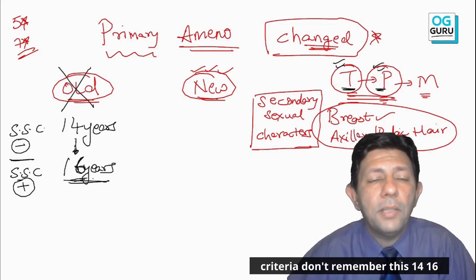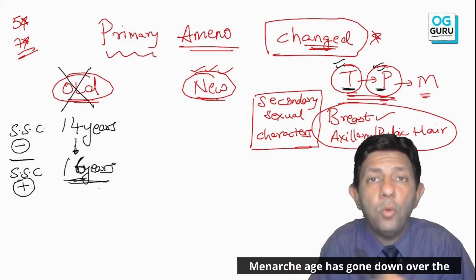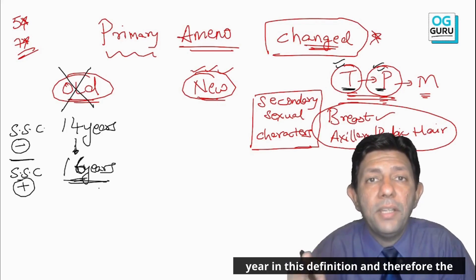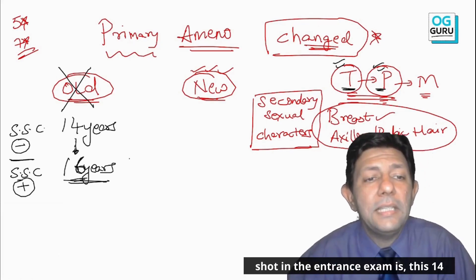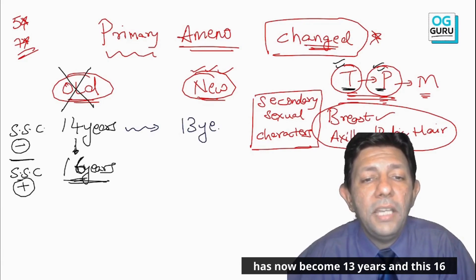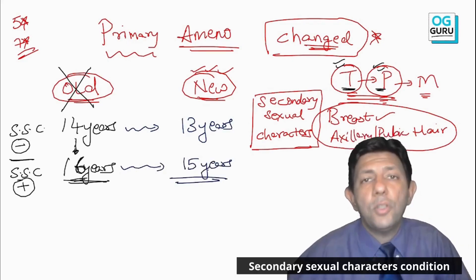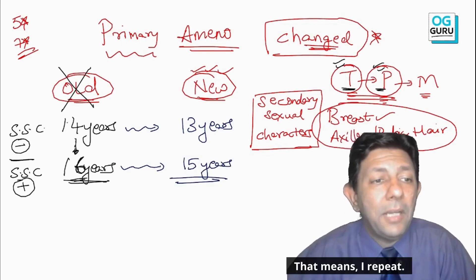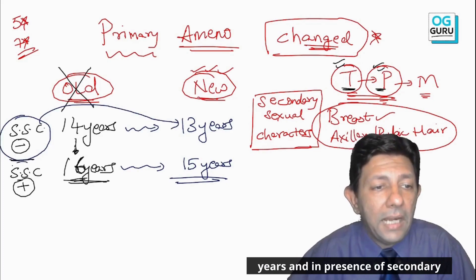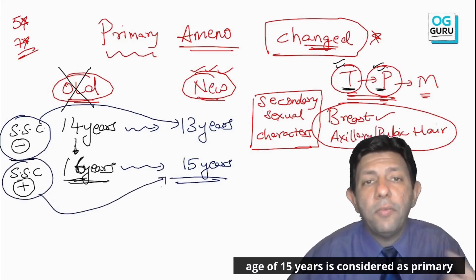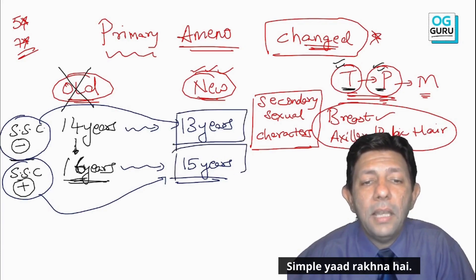This 14 and 16 is the old criteria — don't remember it. Over the last decade, girls have started getting menses earlier; menarche age has gone down. So the definition was updated by decreasing each threshold by one year. The new definition: in absence of secondary sexual characters, no menses till age 13 years; and in presence of secondary sexual characters, no menses till age 15 years is considered primary amenorrhea.